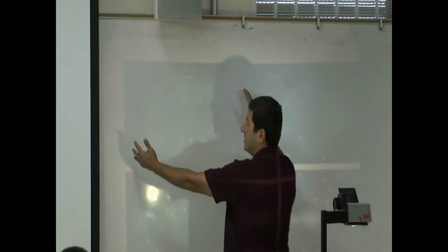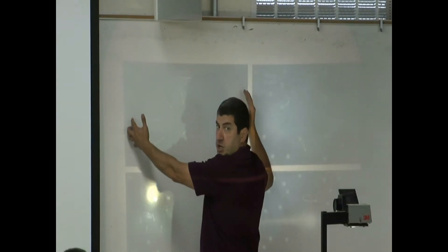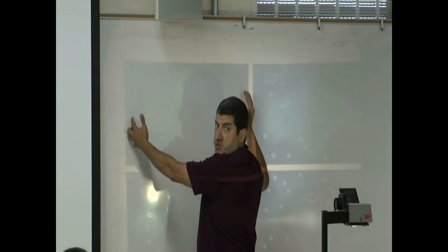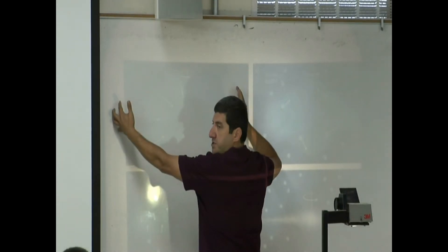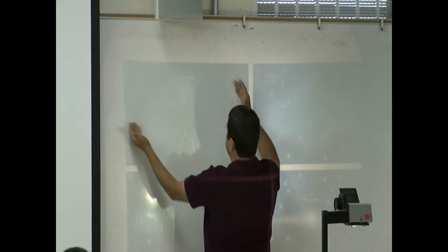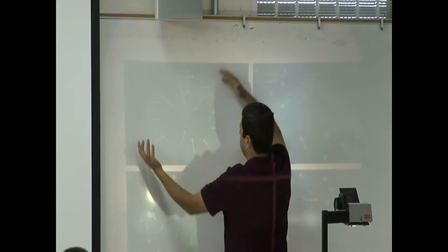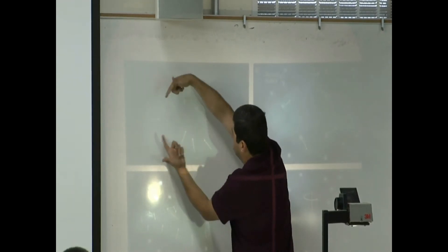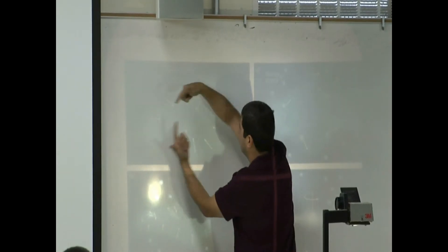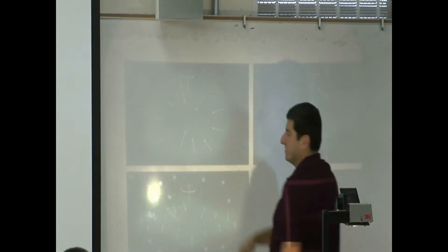Here you have a huge, huge cloud of gas, hundreds and hundreds of million light years in size. And then gravity causes it to collapse and start spinning.